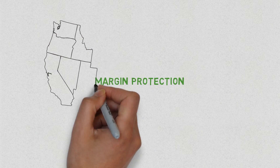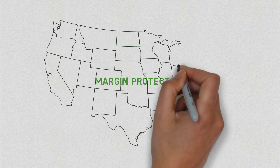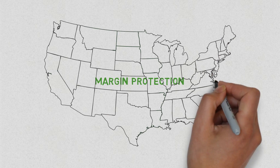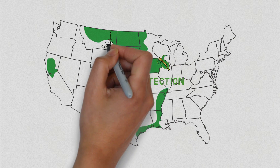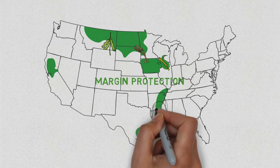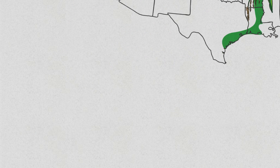Margin Protection is a new multi-peril product on the market this year. It's available in select states for corn and beans, wheat and rice. It provides the smallest revenue deductible in all of crop insurance.